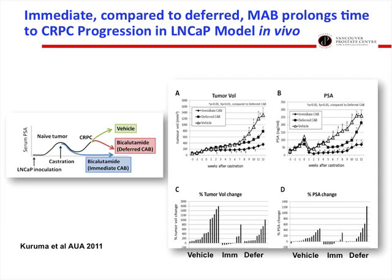CPA is probably inferior to other antiandrogens, and bicalutamide is superior to flutamide. A recent study from Japan looked more stringently at LHRH plus bicalutamide versus monotherapy castration and showed prolonged survival with the addition of bicalutamide. Lab data from Hide Kuruma re-exploring early versus delayed bicalutamide in addition to castration shows that castration plus immediate bicalutamide yields a better delay in progression than castration plus delayed bicalutamide. This is shifting practice back towards MAB and has changed my recommendation to bicalutamide with castration rather than delayed.